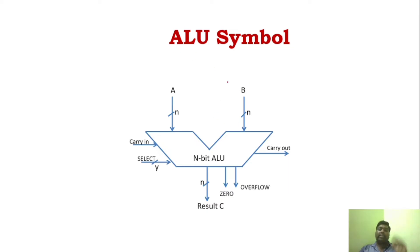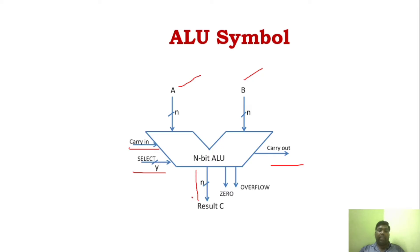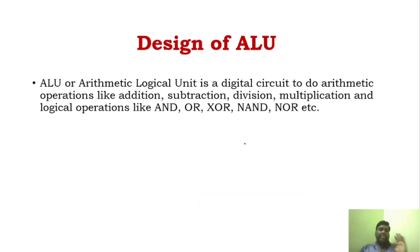Now we'll see the design of ALU. The ALU symbol has a carry-in, select inputs, and data inputs A and B. Based upon the select line, the operations are decided — whether it is an arithmetic or logical operation. There is a carry-in which produces a carry-out, and the result is obtained along with a zero flag and an overflow flag. For a 4-bit ALU, you'll have 4-bit inputs. The ALU is capable of performing arithmetic operations and logical operations.